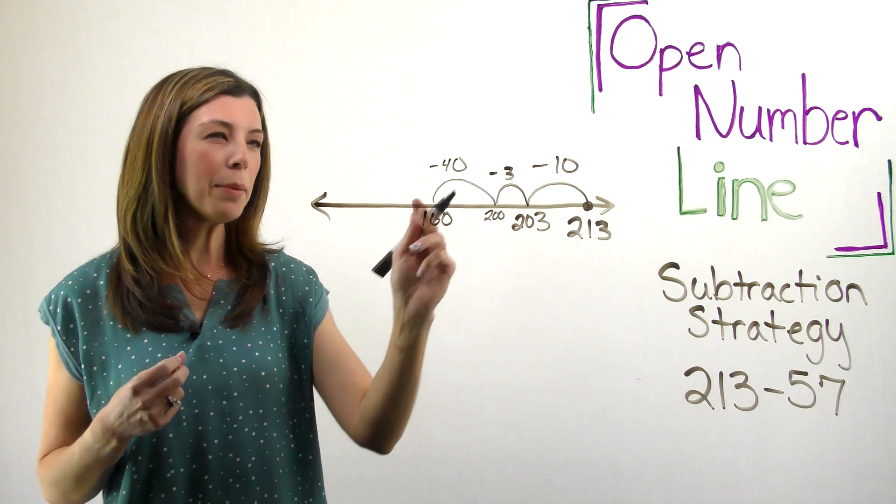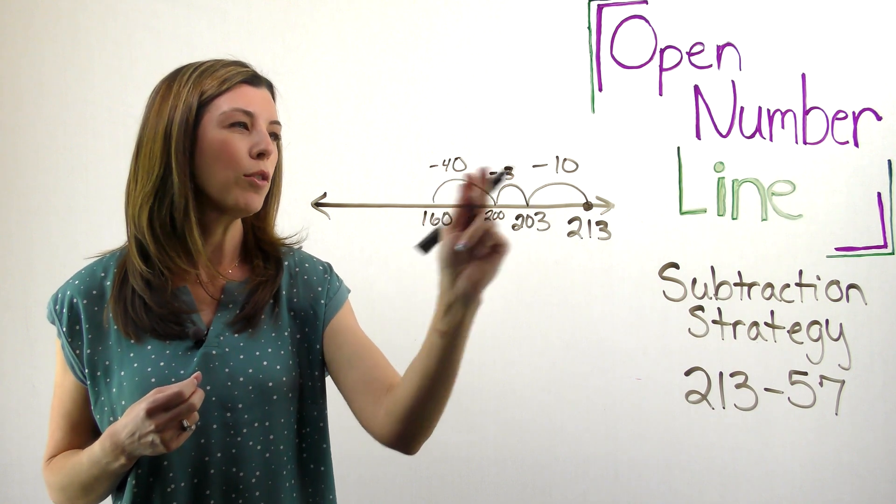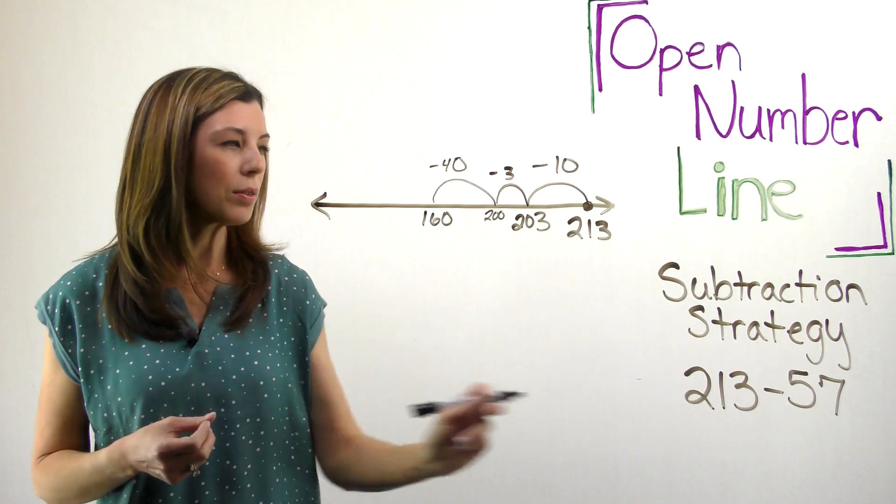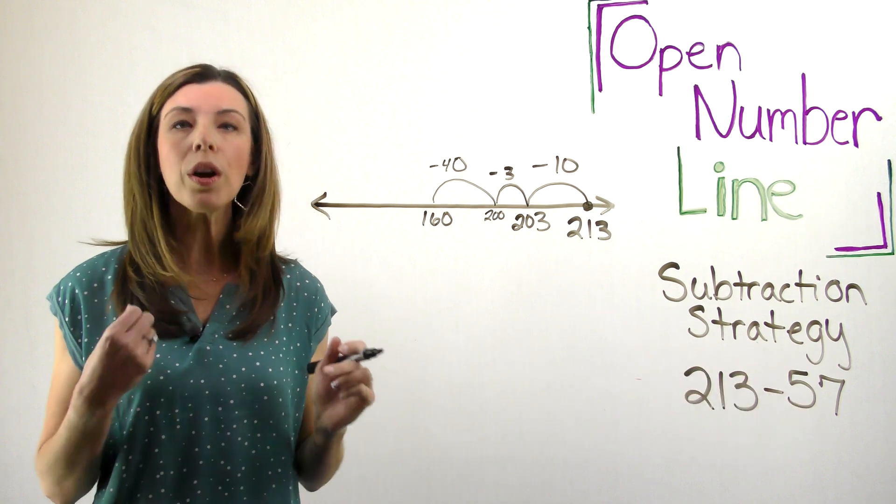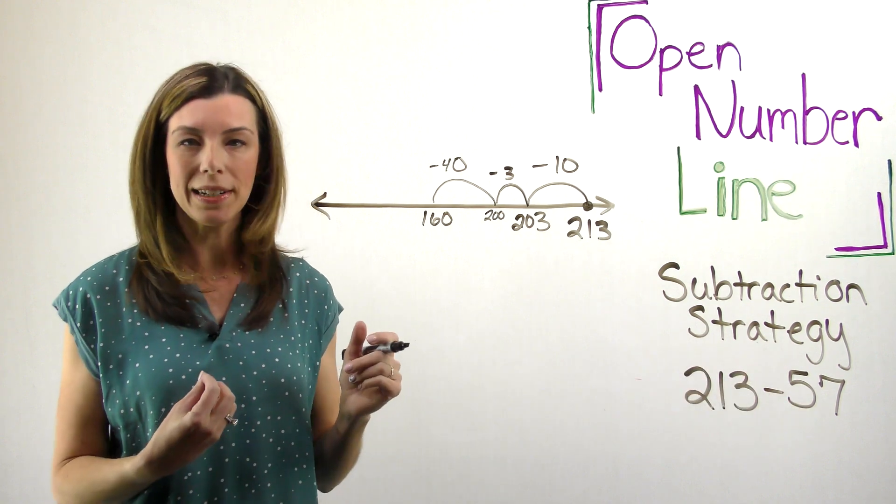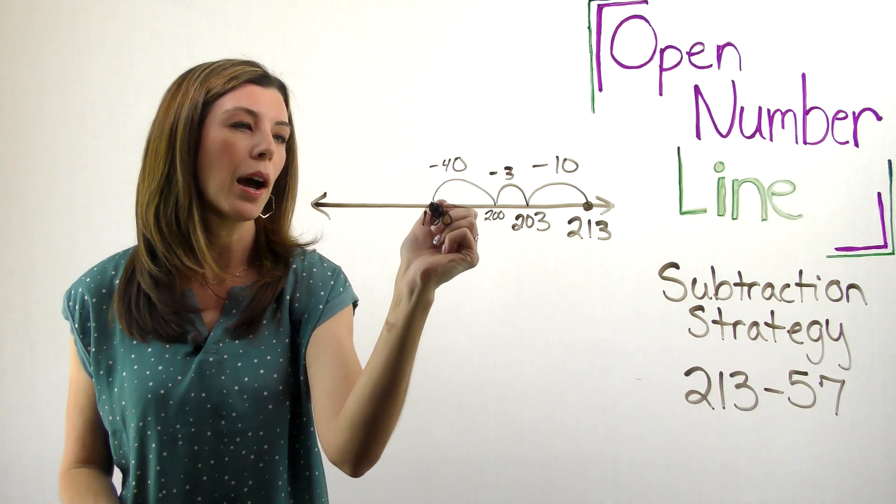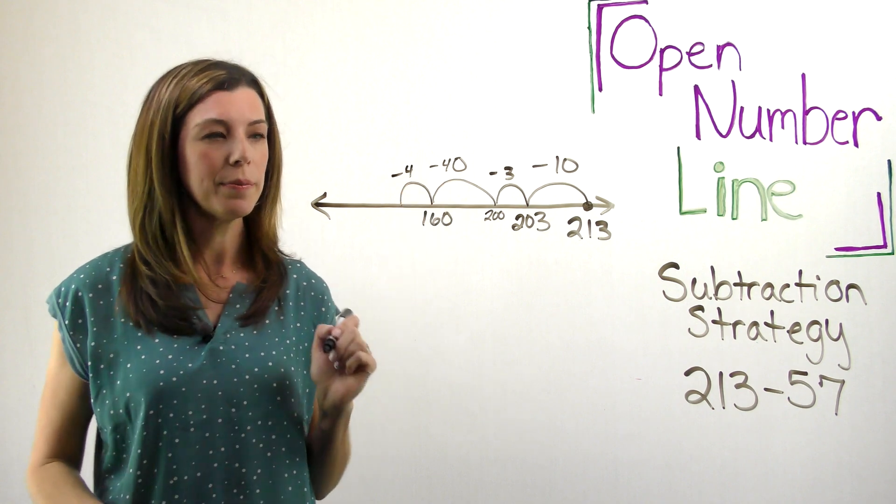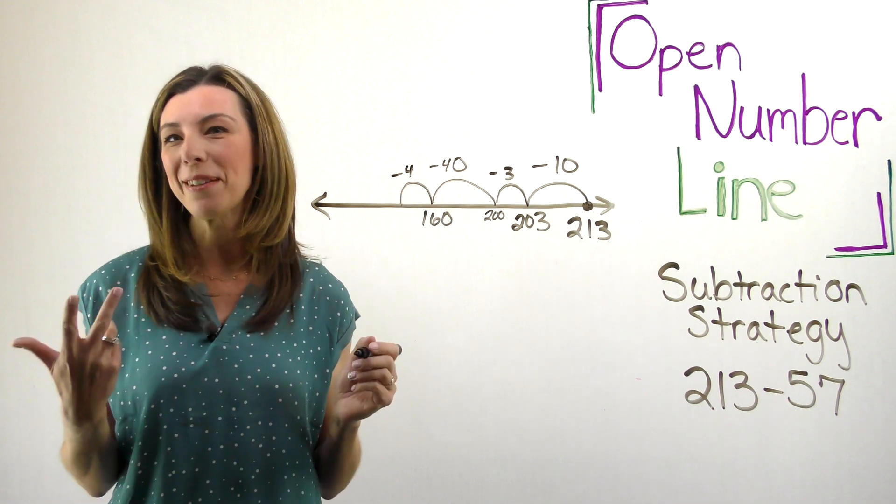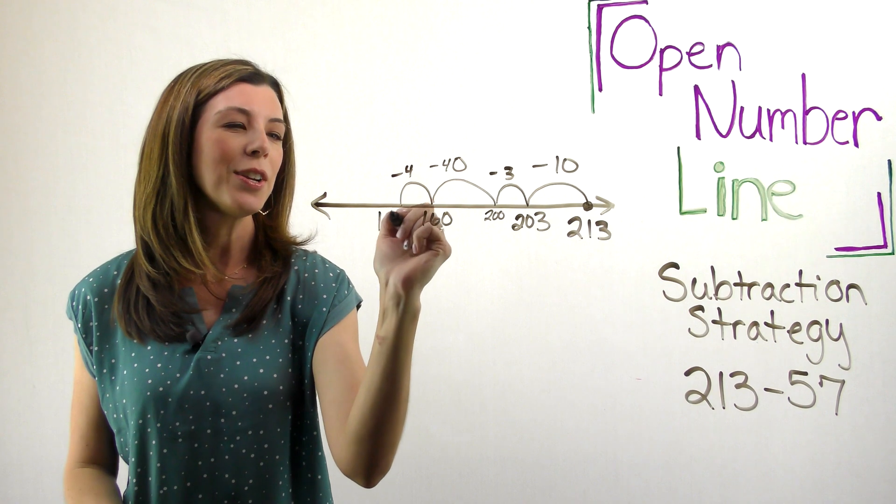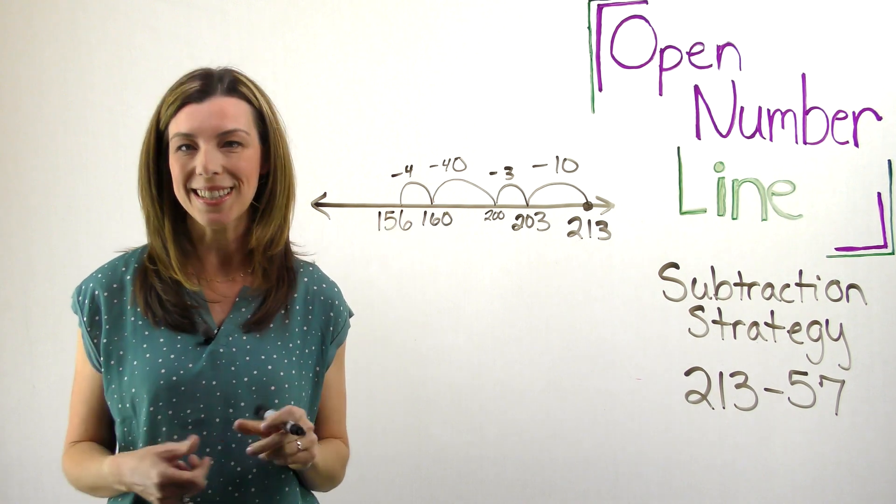So now I'm paying attention to my numbers up here and I can see that I have 40, 50, 53. I am still 4 away from subtracting that 57. So now I'm just going to hop 4 backwards. So 160 minus 4. Again, if I know my combinations to 10, I know that that would give me 156.